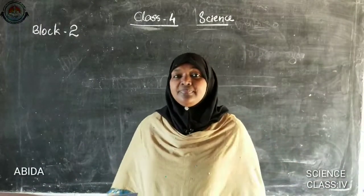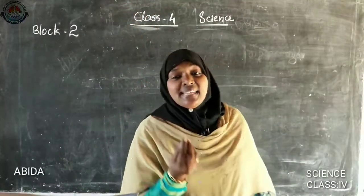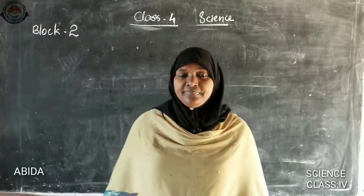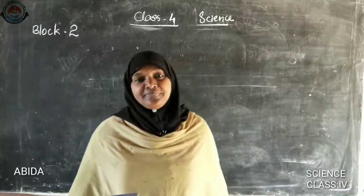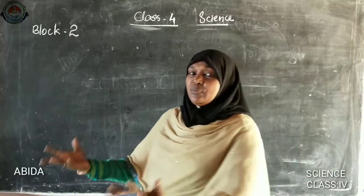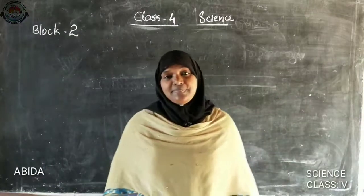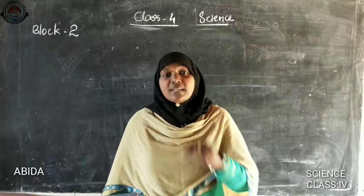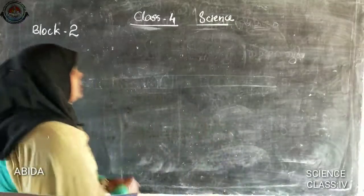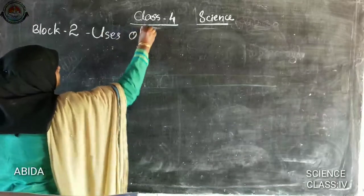What's there? There are big trees, small plants and tiny herbs. Now you have to look at your garden. What did you see there? Yes, many flowers, many plants, many fruits, etc. Then how do they help us? So our block second is: uses of plants.